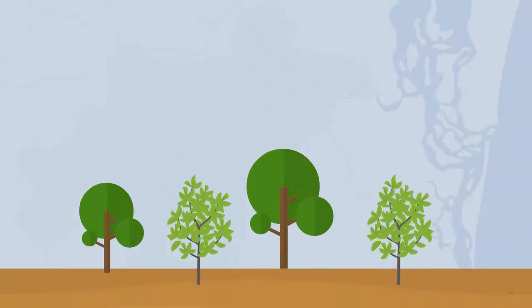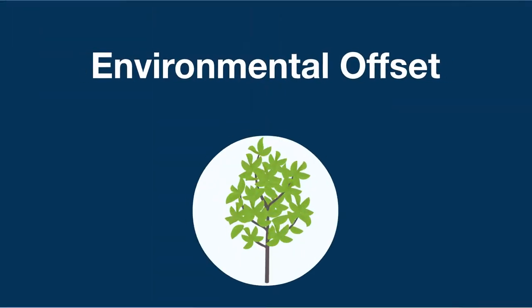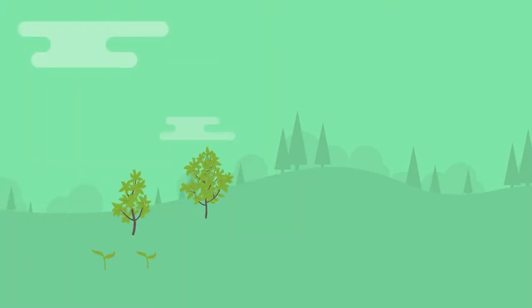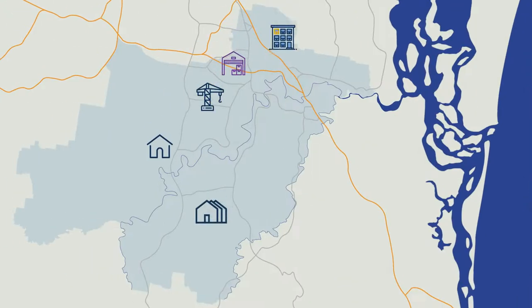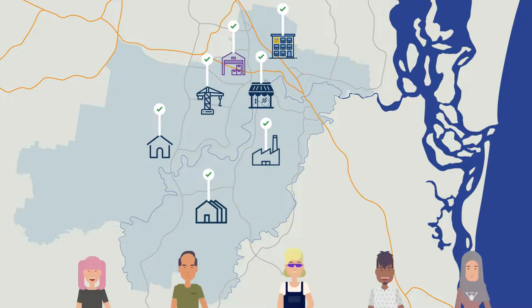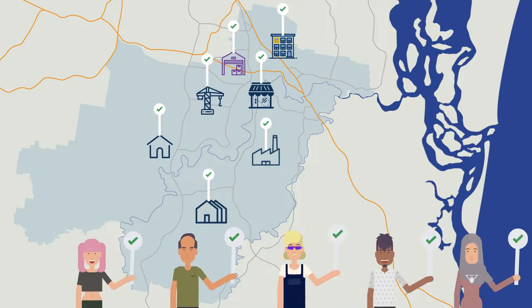And sometimes, if native trees are cleared, developers will provide an environmental offset. This money is used to plant trees elsewhere in Logan. The development assessment process is about making sure when development happens, it contributes positively to our city and our community.